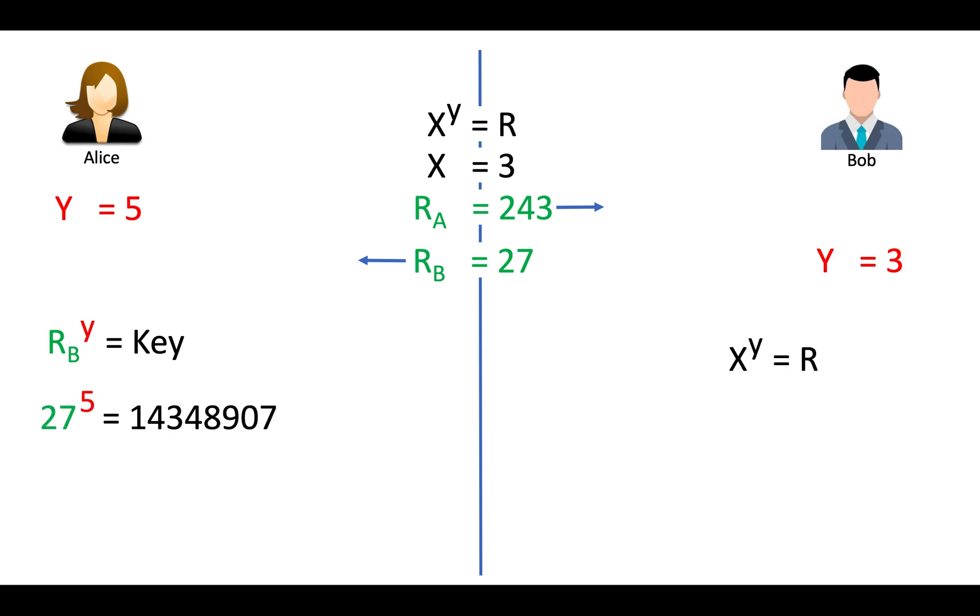On the other side Bob also does the same. Here you can see that both have kept their y value secret and still derive same key. The essence of the formula is this. I hope you understand this method.